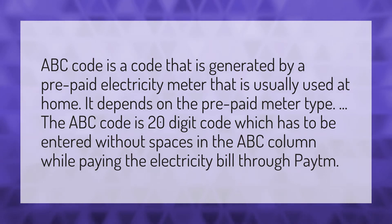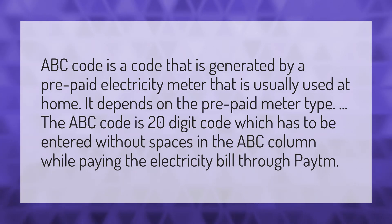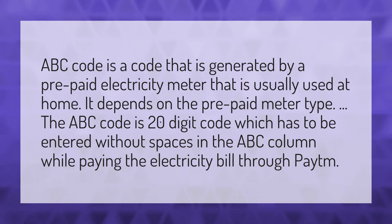ABC code is a code that is generated by a prepaid electricity meter that is usually used at home. It depends on the prepaid meter type. The ABC code is a 20-digit code which has to be entered without spaces in the ABC column while paying the electricity bill through PADEM.